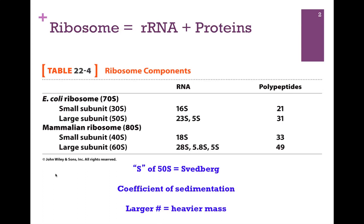The small subunit is 30S and the large subunit is 50S in E. coli. Notice that the mammalian ribosome's small and large subunits are larger than those of E. coli, and there are a larger number of polypeptides.